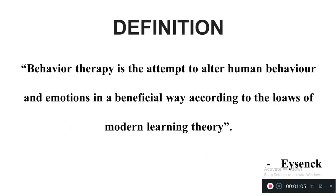Now let's see the definition of behavior therapy. According to Eisen, behavior therapy is the attempt to alter human behavior and emotions in a beneficial way according to the laws of modern learning theory. So by applying the learning theories like classical conditioning theory or operant conditioning theory, this therapy is trying to change human behavior which is abnormal and unhealthy emotions.